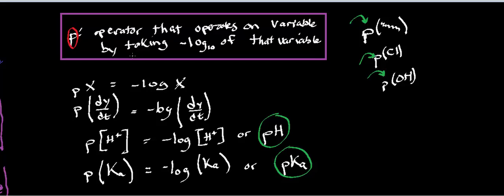P is an operator. What is an operator? An operator is something that operates on a variable and performs some function. Anytime you see this lowercase p and then some variable, as in p times the concentration of H+, where H+ is the variable, what it's doing is P is essentially a shorthand way of writing negative log base 10 of the variable.